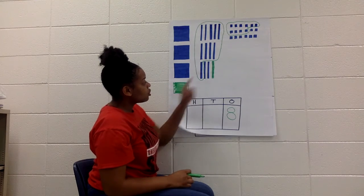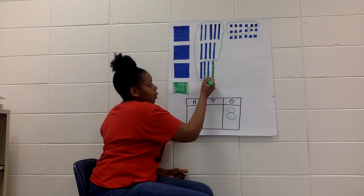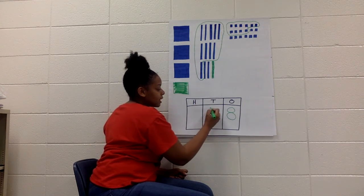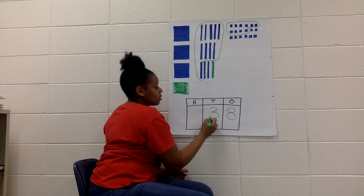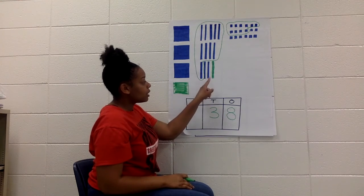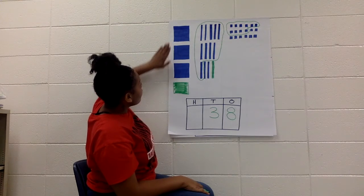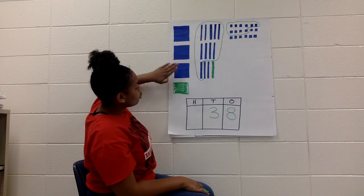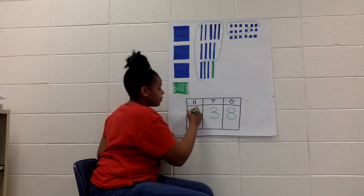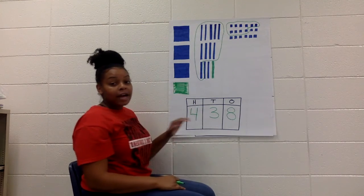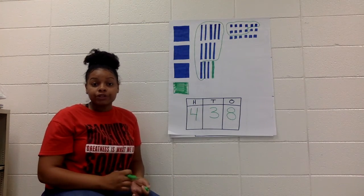How many tens do I have left? I have one, two, three tens left. Or 30. 10, 20, 30. Lastly, I'm going to count my 100. I have 100, 200, 300, 400. My final number is 438.